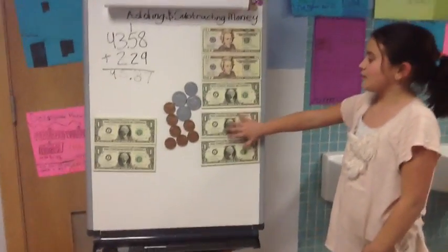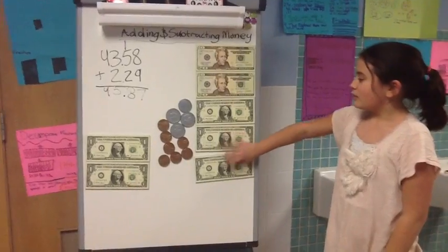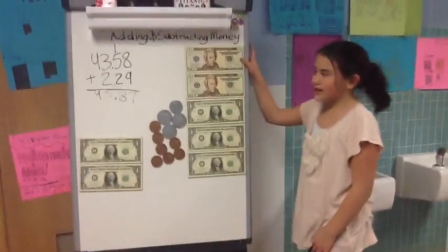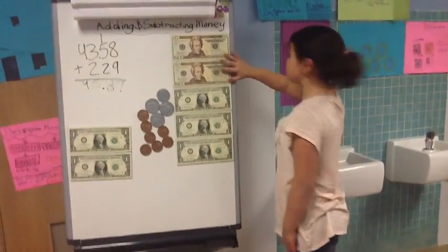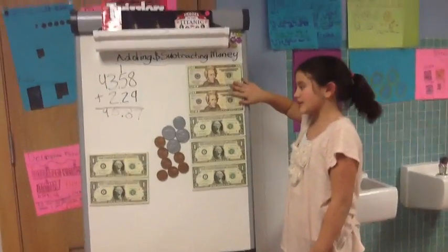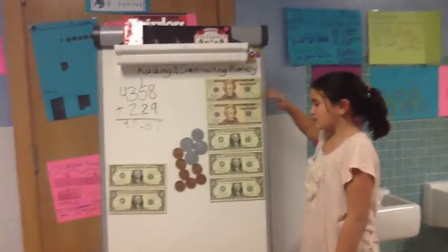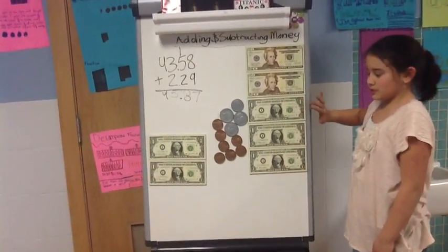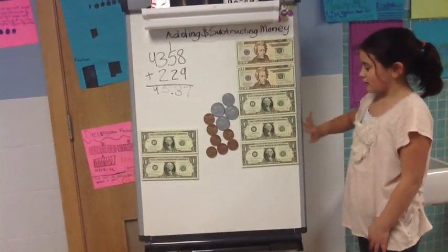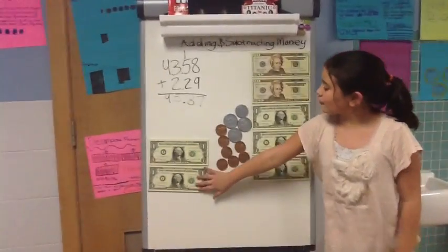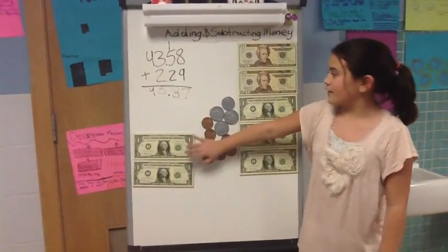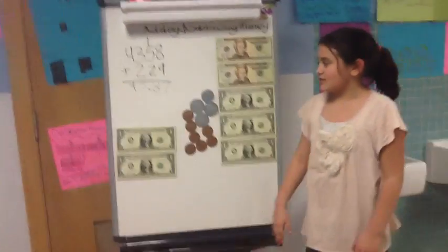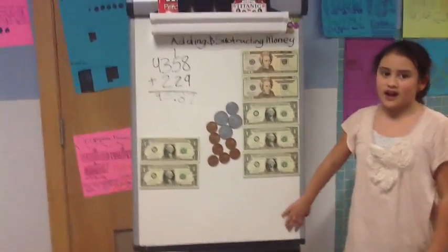Then we add our dollar bills. We start with the big dollars. We have two $20 bills, which equals $40, plus single dollars: 41, 42, 43, 44, 45. So we got the same exact answer as we did with our algorithm.